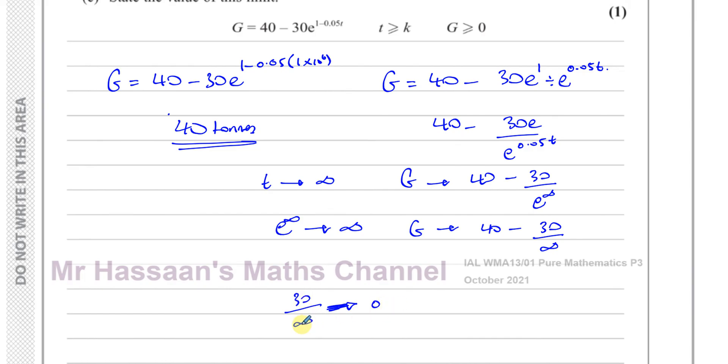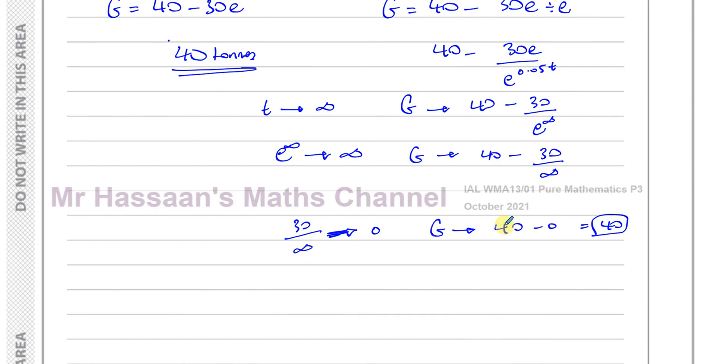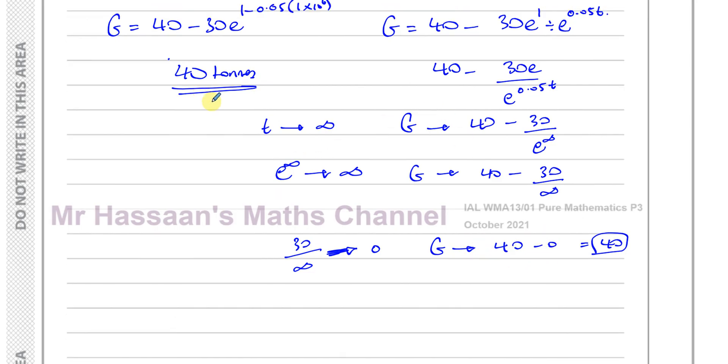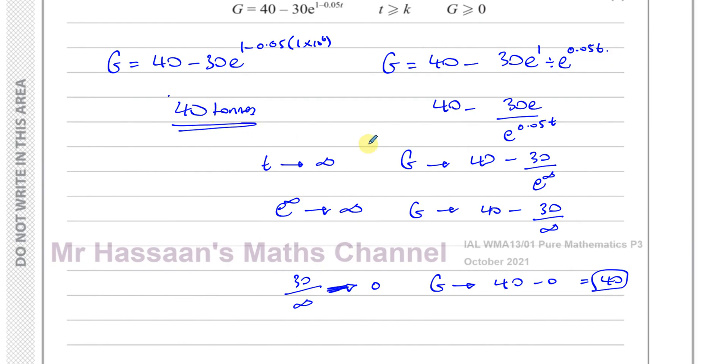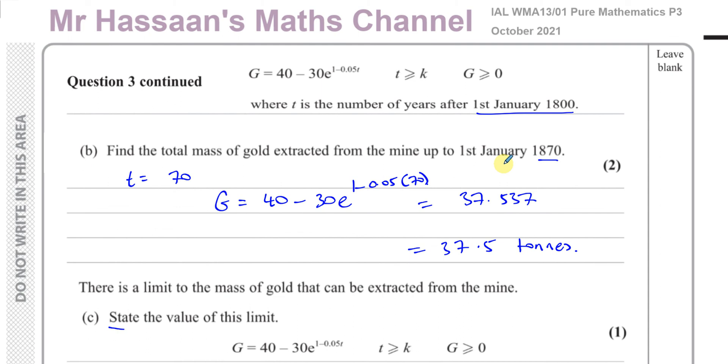And 30 over infinity, like a number over a really huge number, is basically going to approach 0. If you divide something by a really big number, you're going to end up with a really small number. So as this denominator gets bigger and bigger, this value approaches 0. So when this approaches 0, G approaches 40 minus 0, which is equal to 40. So that's how you can justify, although you don't have to do that here. All you need to do is just state the limit, one mark. Just doing this to make sure will give you the answer. You don't really have to show all these steps, but just for your understanding of why it approaches 40 tons from this model, you can see why from this little explanation.